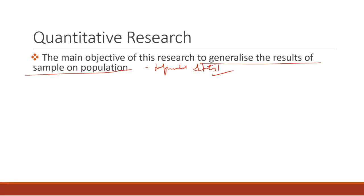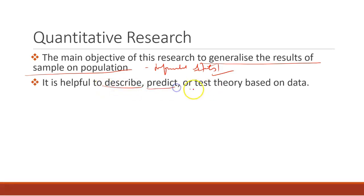It is helpful in describing, predicting, and testing a theory based on data. So qualitative is used for building theory and quantitative is used for testing theory. In this you can test theories, predict relationships, and describe phenomena. All things are possible in quantitative research.